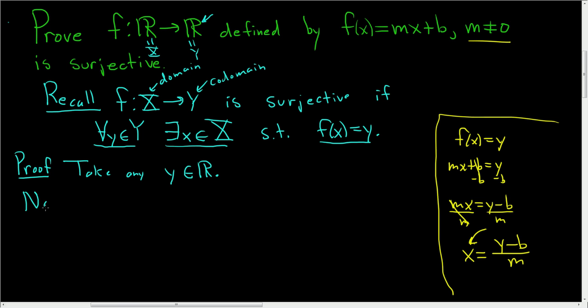Note, first we have to show there exists a number x in capital X. We have to mention why this is a real number. Well, y is a real number, b is a real number. When we subtract them, we get a real number. When we divide by a non-zero number, it's still real. So this fraction is indeed a real number. This part's done. Now we have to show this part.